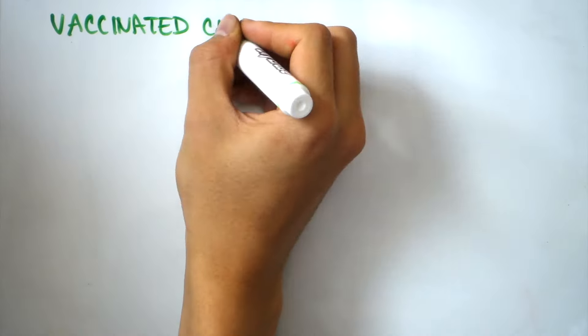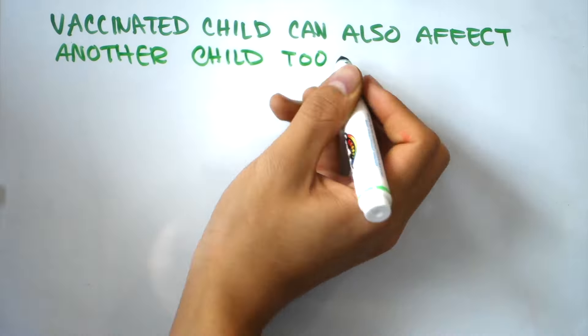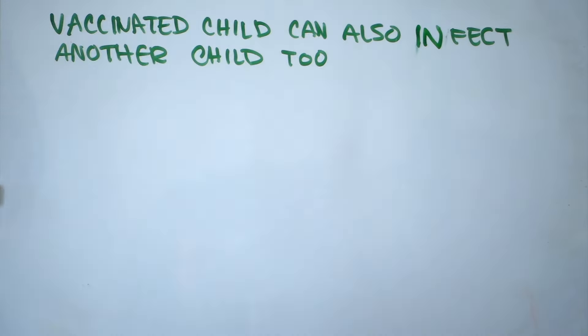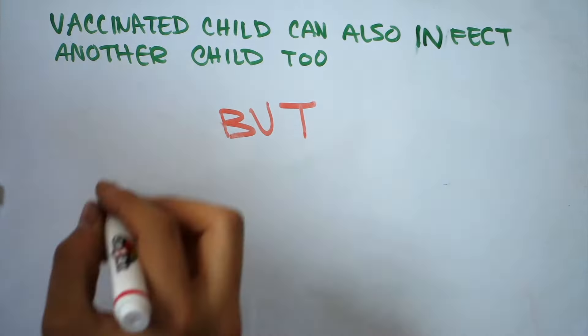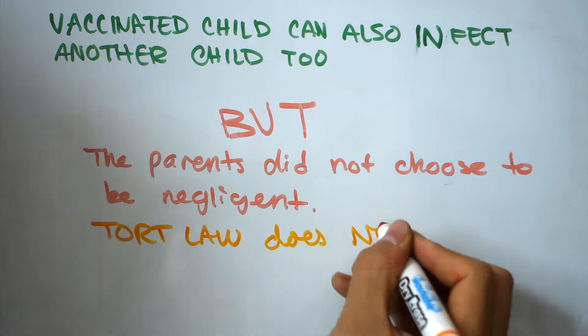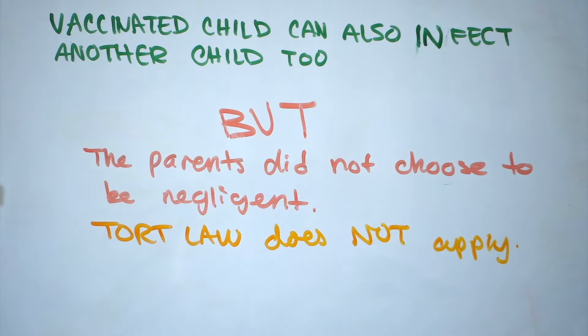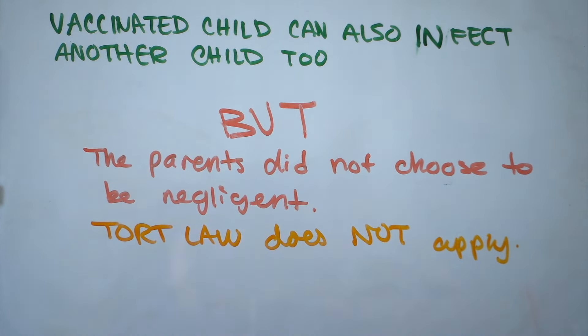Opponents could also argue that children may be infected by vaccinated children. So what's the difference? Well, our tort system only imposes liability when an unreasonable choice is actively made and that choice causes harm. So the parents of a vaccinated child who infected another child would not have been purposefully negligent and thus not held liable, whereas a non-vaccinating parent in the same case might be deemed negligent.